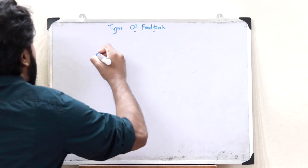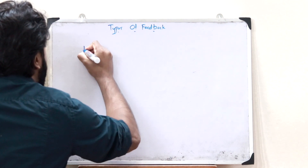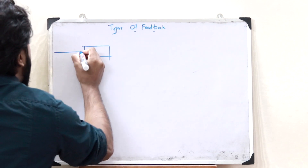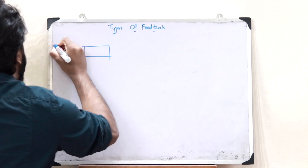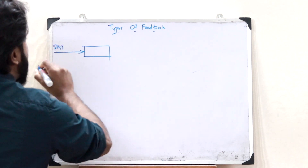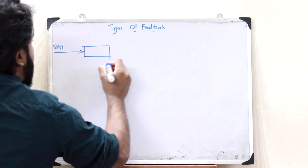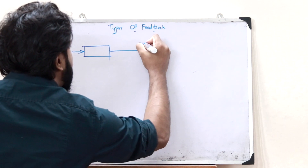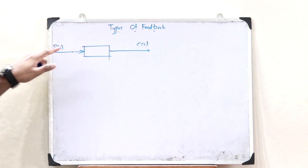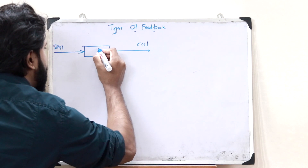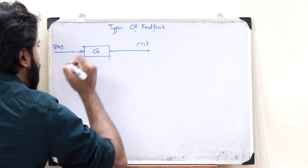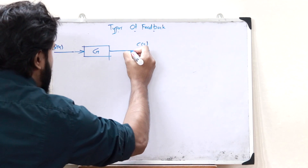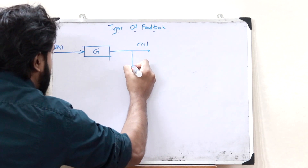A typical control system would look somewhat like this. It would have an input signal, say R of S. When an input signal is given, it will provide an output signal, C of S. Here, the gain of this particular control system is given as G. And now in a closed-loop control system, we would provide a feedback like this.